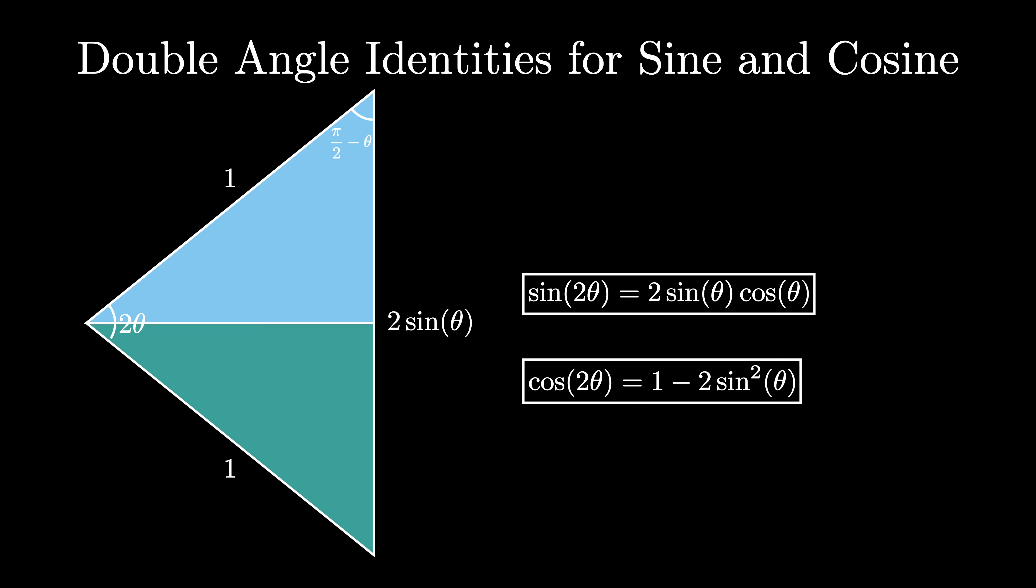Implicit in this diagram is that the angle theta is acute. Do you think the identities hold when theta is obtuse? Can you prove it? Is there a visual proof showing the double angle identities in that case?